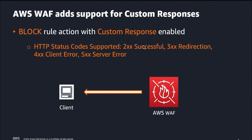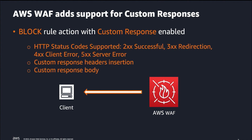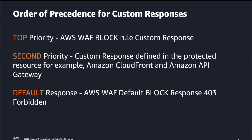You can also optionally define custom response headers to be inserted into the original response header and the custom response back to the client. You can also optionally define a custom response body in the custom response back to the client. When considering the order of precedence for custom responses, the custom responses you specify for the AWS WAF block rule action will always take precedence over any response specifications you define in your protected resource.